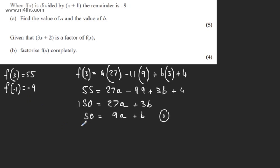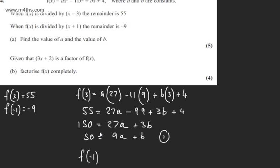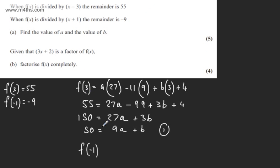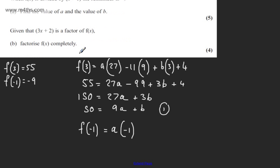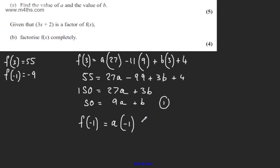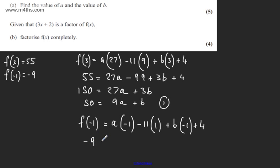If we now take f of minus 1, this gives us a multiplied by minus 1 cubed, so a multiplied by minus 1. Then minus 11 lots of minus 1 squared, which is minus 11 lots of positive 1. Then plus b multiplied by minus 1, giving minus b, and then plus 4.